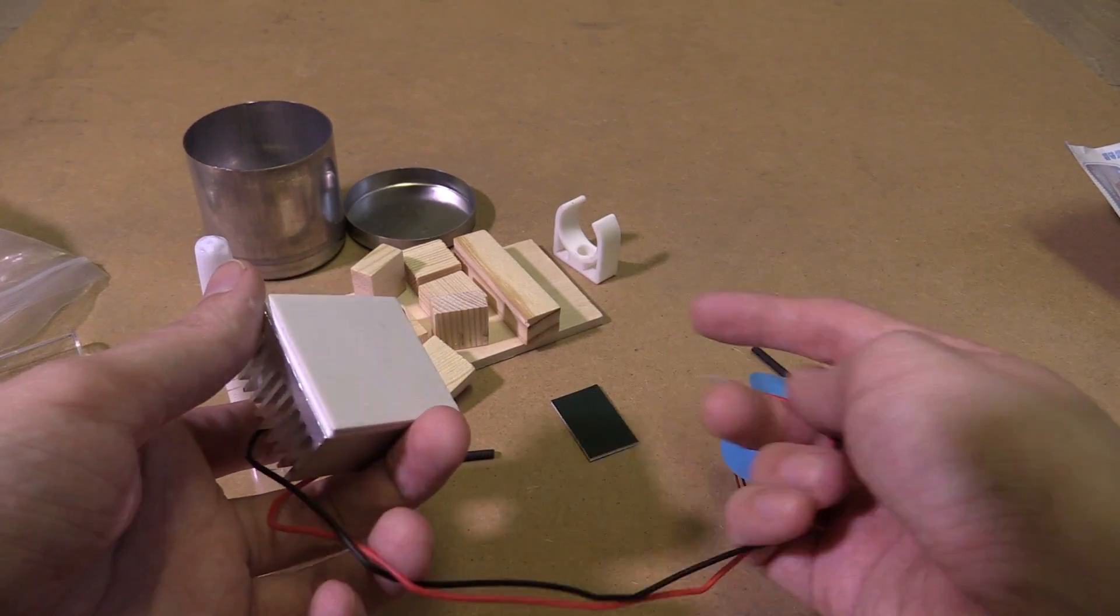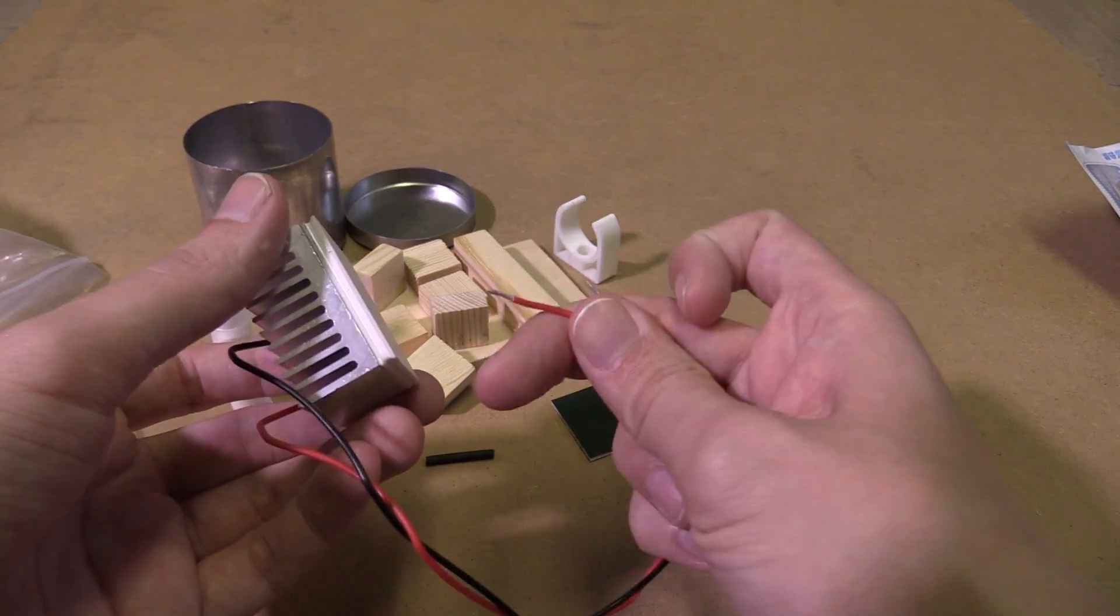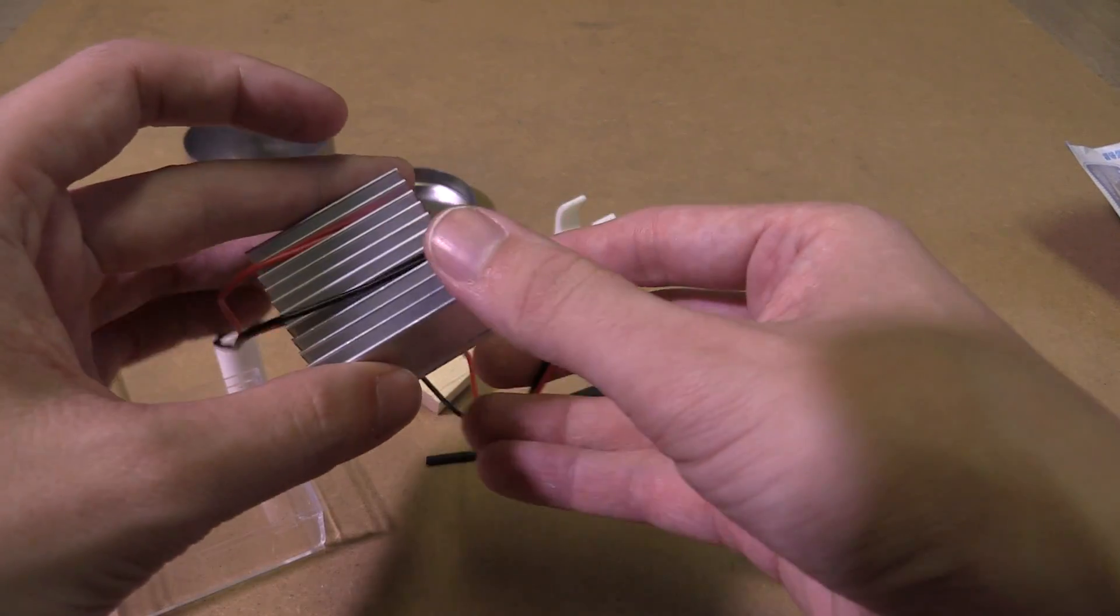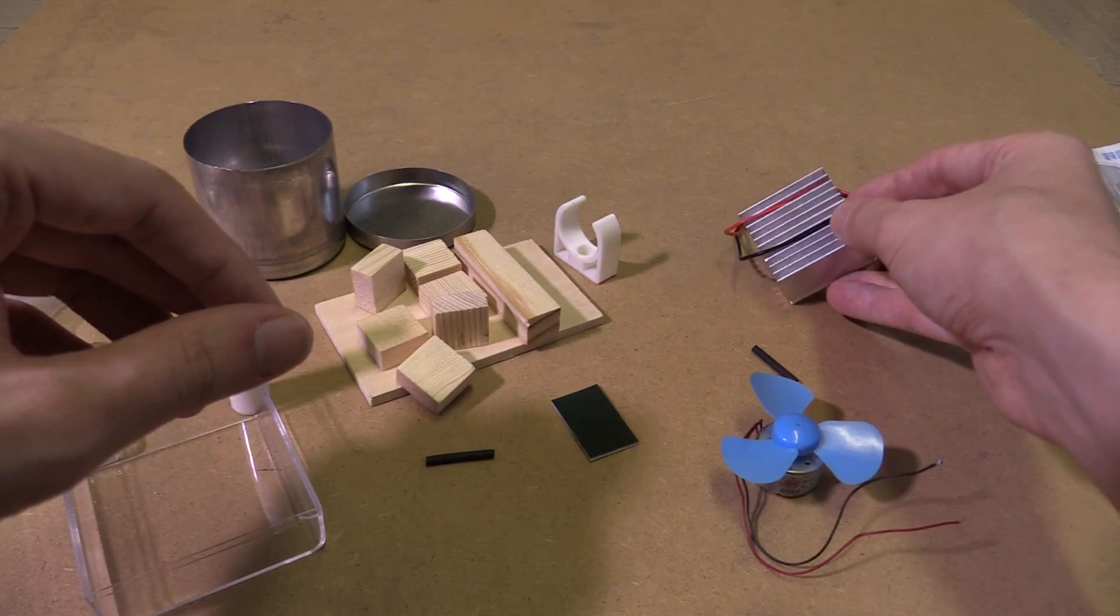But on the flip side, you can apply heat to one side or make the other side cold and it will generate electricity. So I assume we're going to be using something like a flame or hot water. I actually don't know exactly how this kit works.